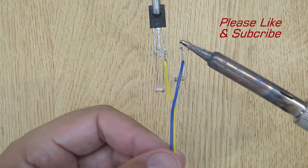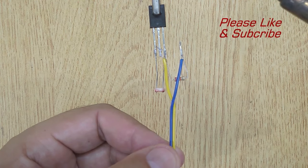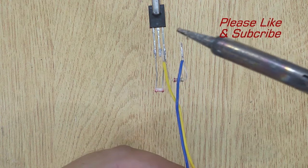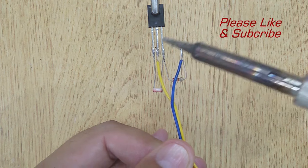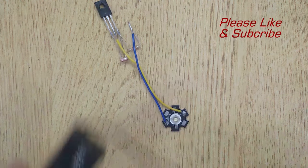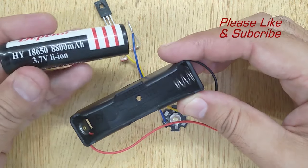Now solder the positive pin of LED with the resistor and the negative pin of LED with the collector of the transistor. Now insert 18650 battery into the battery holder.